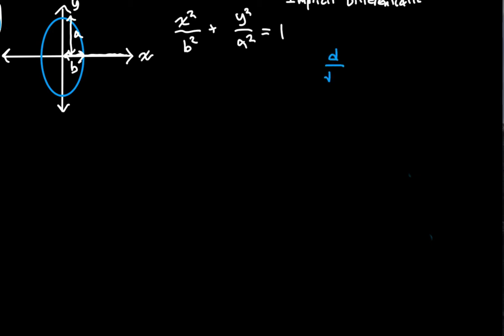So I'm going to have the derivative with respect to X of 1 is equal to the derivative with respect to X of X squared over B squared plus Y squared over A squared.